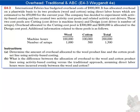The two cost pools are cutting, with the cost driver being machine hours, and design, where the cost driver is number of setups. Overhead allocated to the cutting cost pool is $300,000, and $600,000 is allocated to the design cost pool.